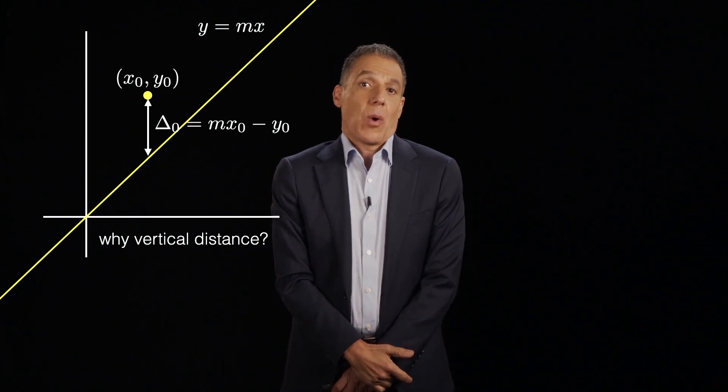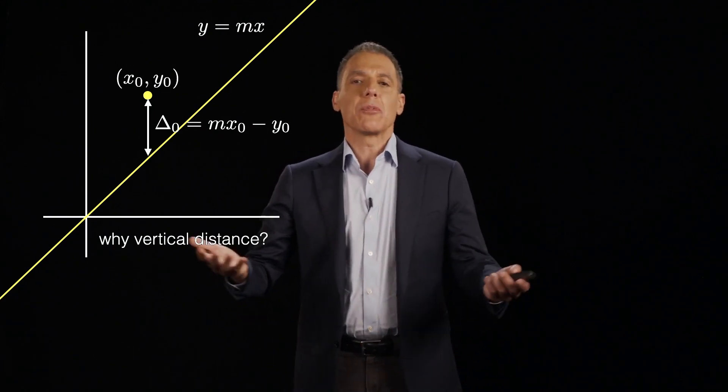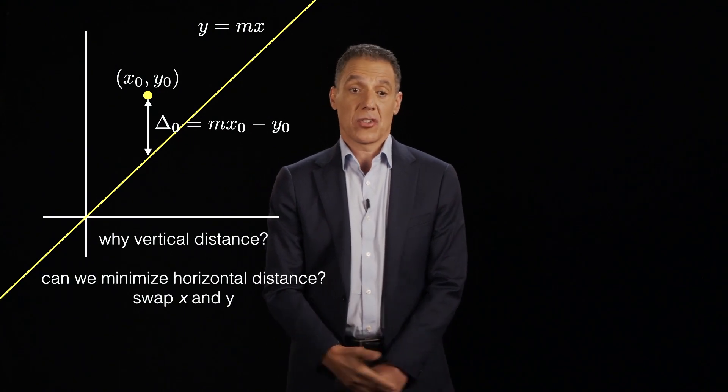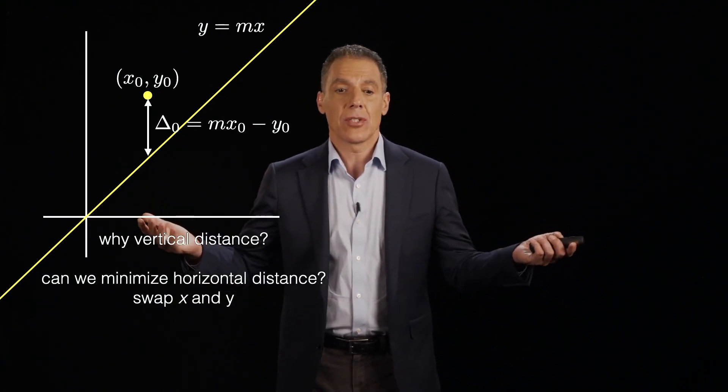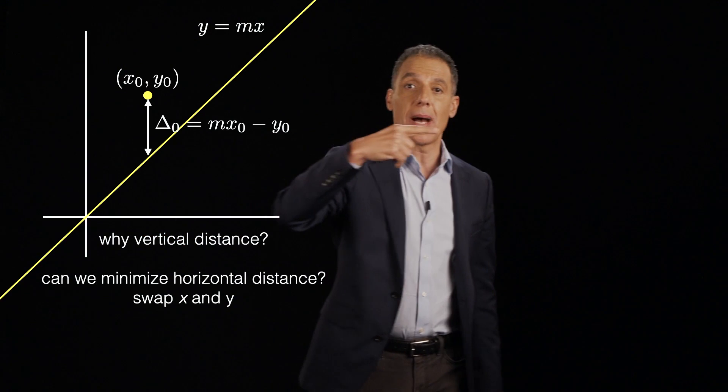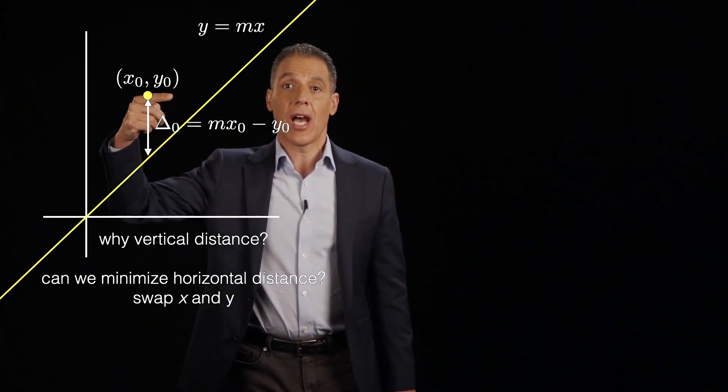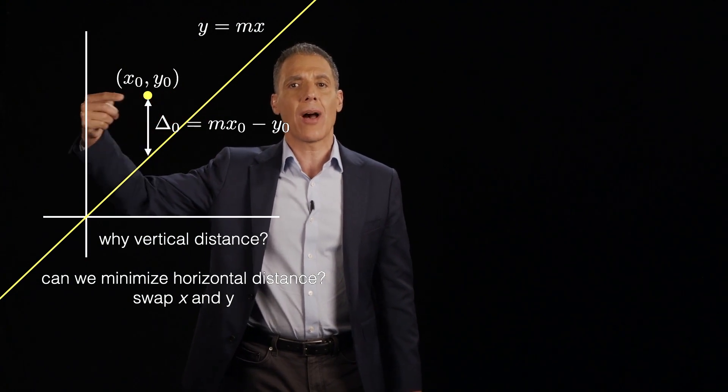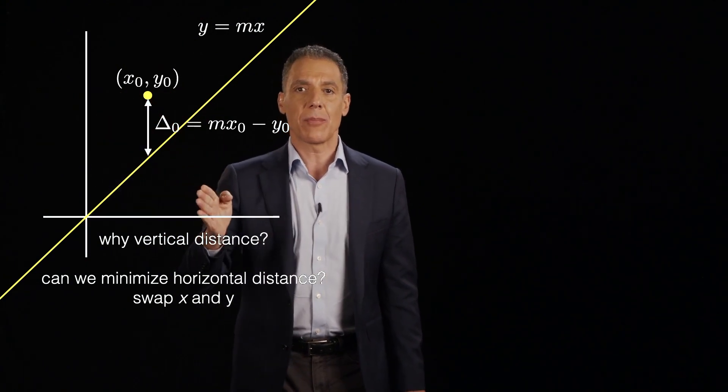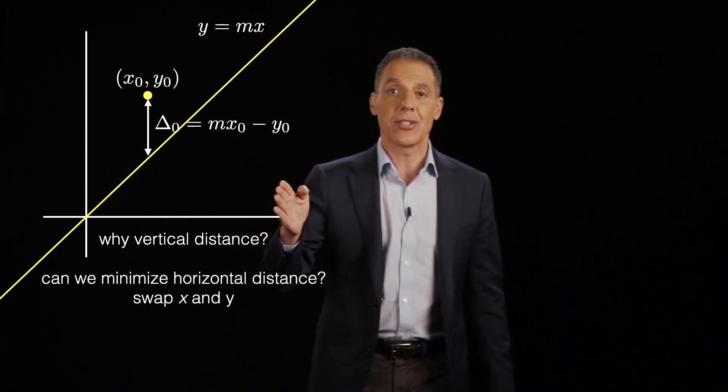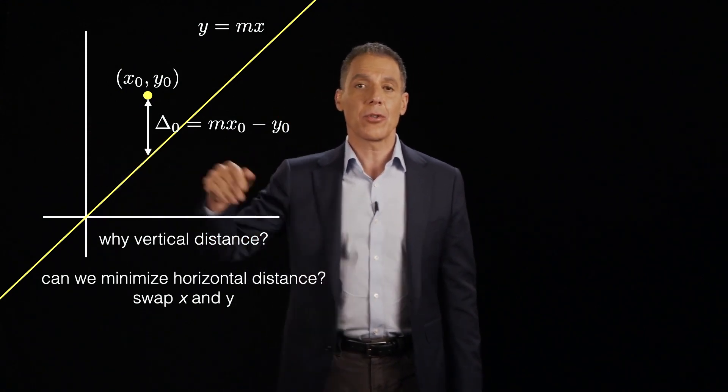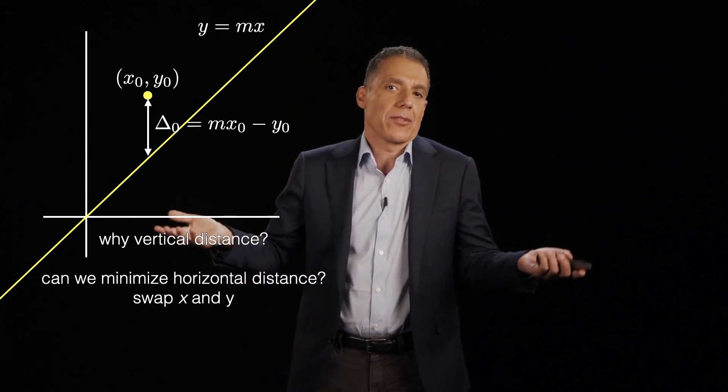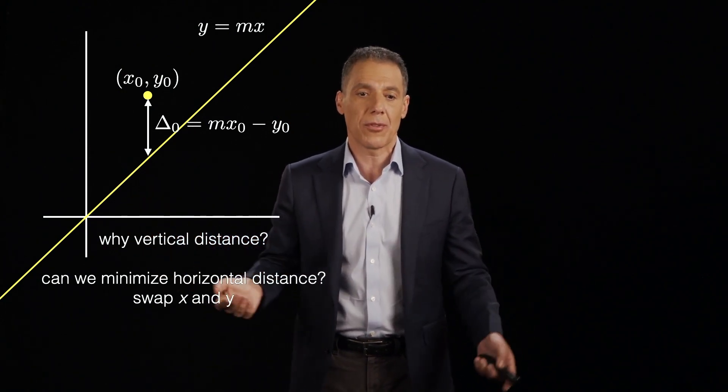So it's obviously a reasonable question to ask: why vertical distance? Well, there's some good reason as I just enumerated. But it's also a good question to ask: can we do something else? So, could I, for example, have minimized the horizontal distance? I mean, that's also a pretty good measure of fit. And what would I have done here? I would have said, well, I'm going to assume that there's some error in this dimension and not in the vertical dimension. Is that good? Is it bad? Is it right? Is it wrong? I don't know. It depends on the data. It's certainly a perfectly reasonable thing to do.